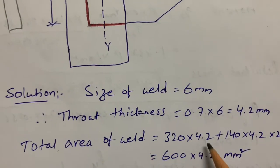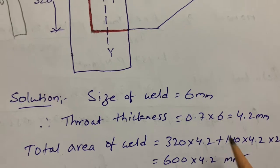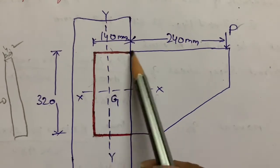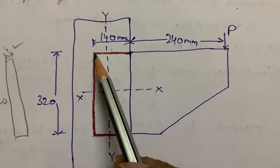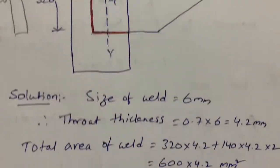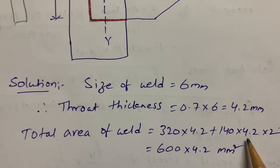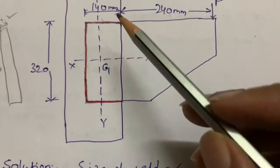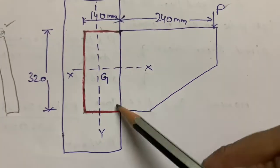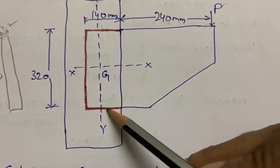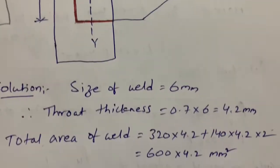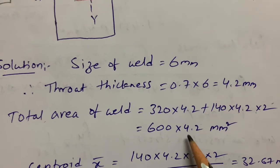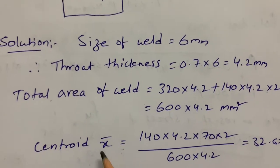The area formula is length × breadth. Considering the welding portions as rectangular sections: area = 320 × 4.2 + 140 × 4.2 × 2. The factor of 2 accounts for welding on both sides. This gives us the total weld area.